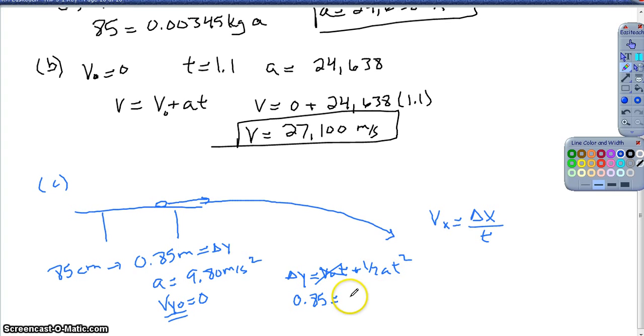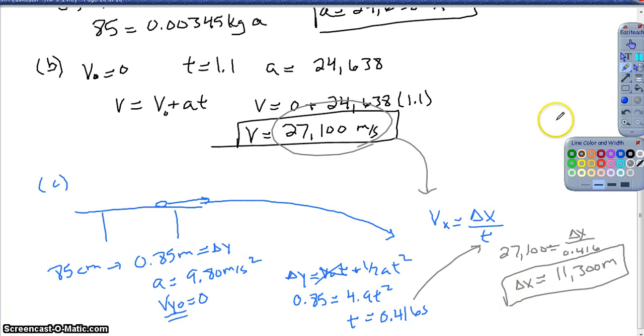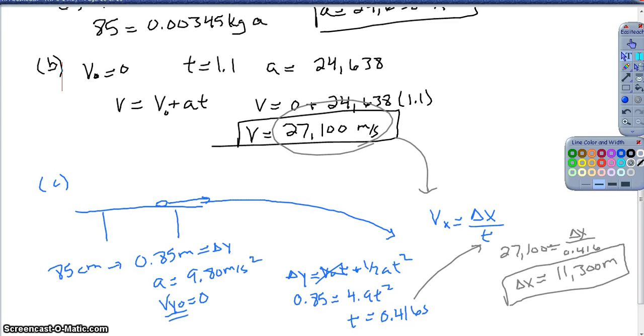And once I have that time, at this point, hopefully it's pretty easy, I've got my horizontal velocity from the part before, I have my time, it's just bringing it all together. So 27,100 equals delta x over my time of 0.416, and solving for delta x, we get about 11,300. That's going to vary a little bit depending on where you've rounded it. But anyway, so I get some ridiculously large numbers, obviously not a realistic context here, but it is still good to be confident enough with the calculations and the concepts to make sure you're comfortable working through this.